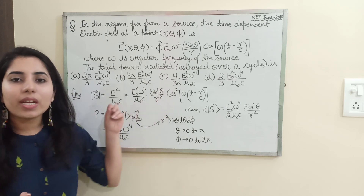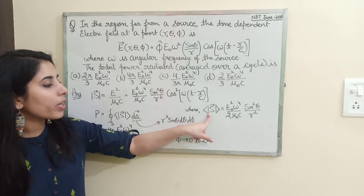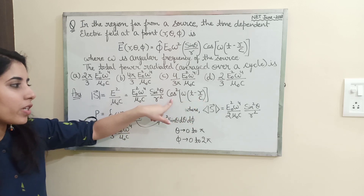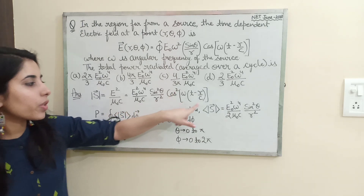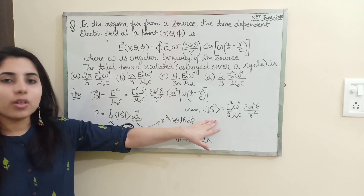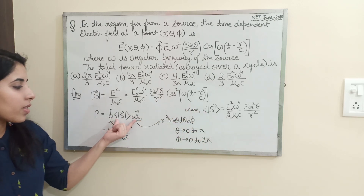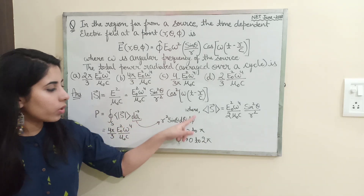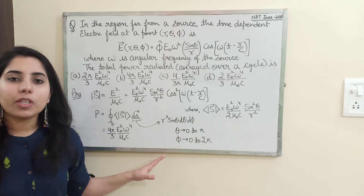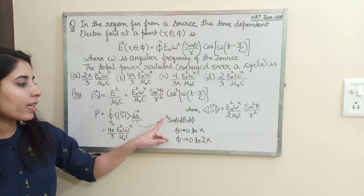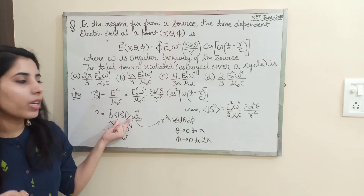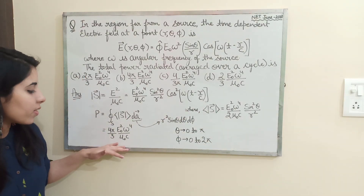After finding the Poynting vector, you need its average to find the power radiated. The average of cos²(ωt − r/c), which is present in the expression, gives 1/2. So the average Poynting vector will have 1/2 from that term and the rest of the terms remain the same. Then directly put this value into the surface integral expression. Put dA = r² sin θ dθ dφ, with θ varying from 0 to π and φ from 0 to 2π. The r² terms cancel out, and that is how you get the final expression very easily.